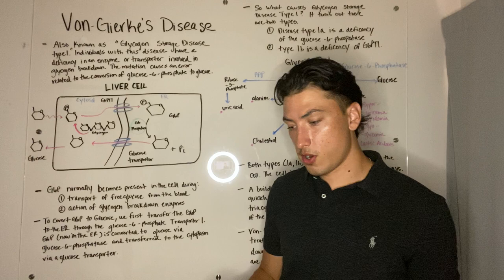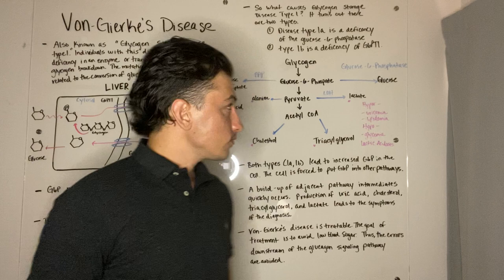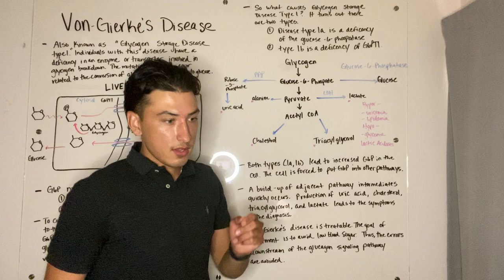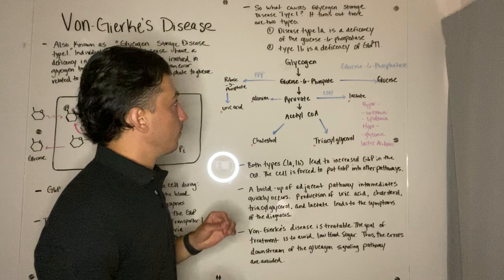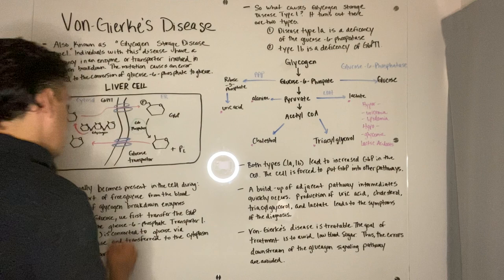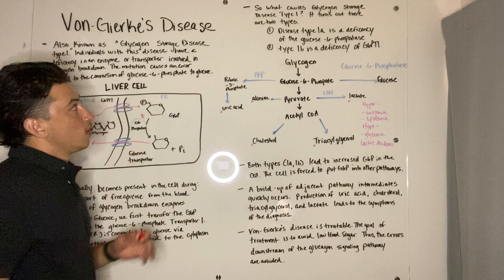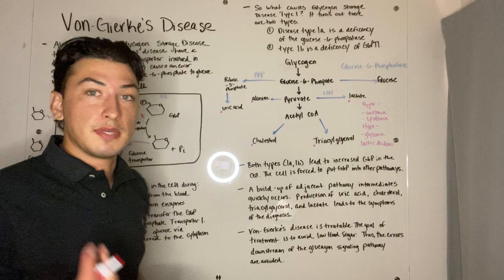Once inside of the cytosol, glucose can leave the liver cell and be used by the body. There are two different ways that glycogen storage disease type 1 can occur. Type 1a is a deficiency of glucose 6-phosphatase, and type 1b is a deficiency of G6PT1 — our glucose 6-phosphate transporter 1.